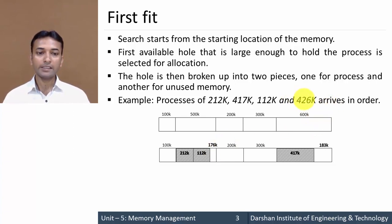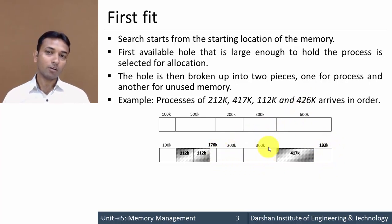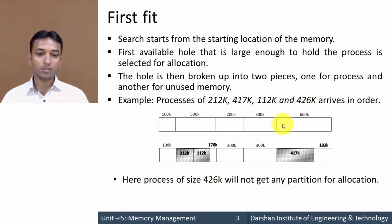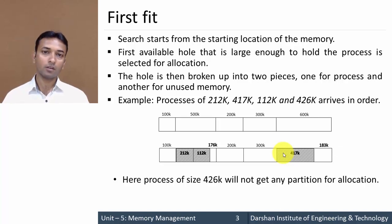For the last process of 426 KB, the algorithm searches all partitions — none are large enough to hold this process. We cannot place a process across two partitions; only one partition can be allocated to any process. So the fourth process of size 426 KB will not get any partition for allocation. This is how the First Fit algorithm works.